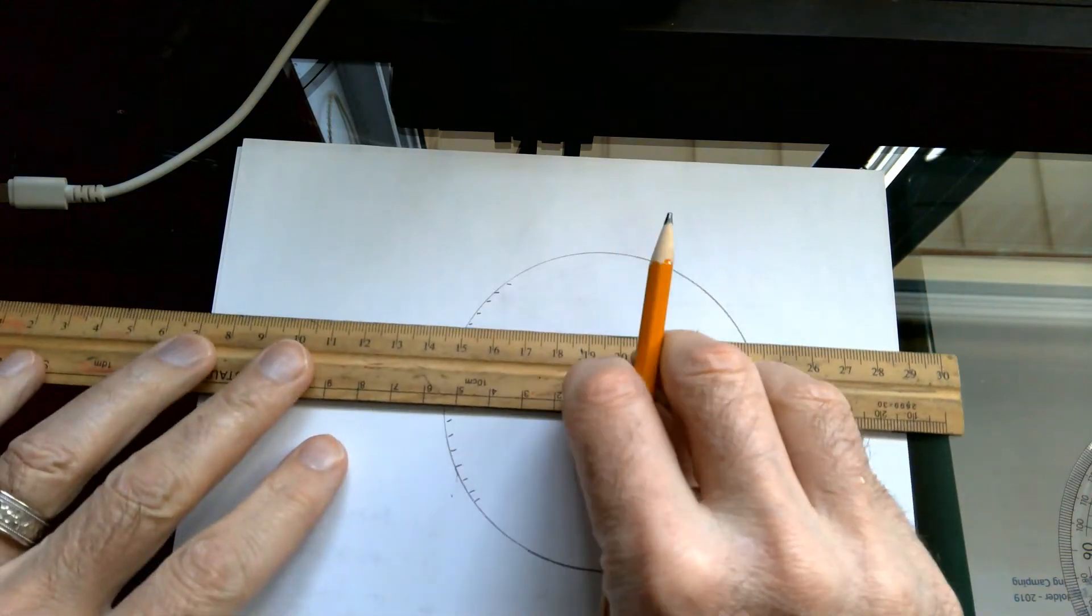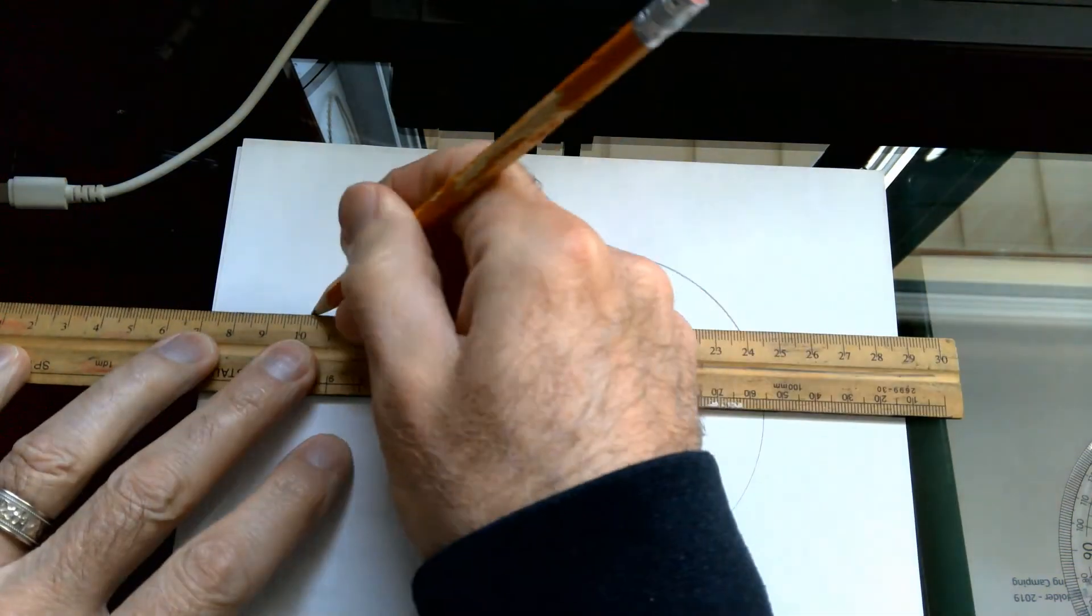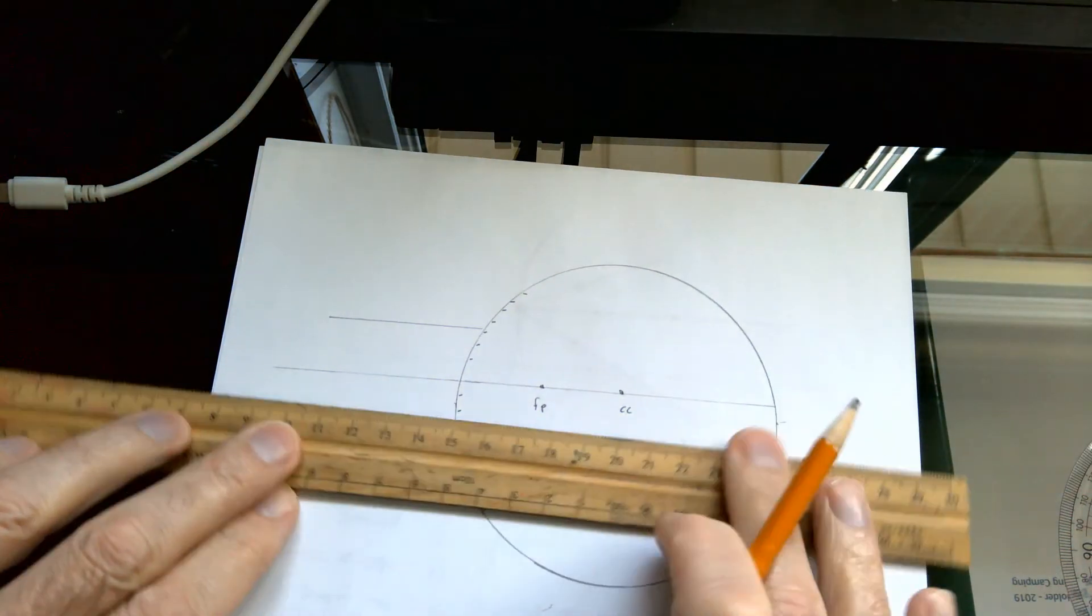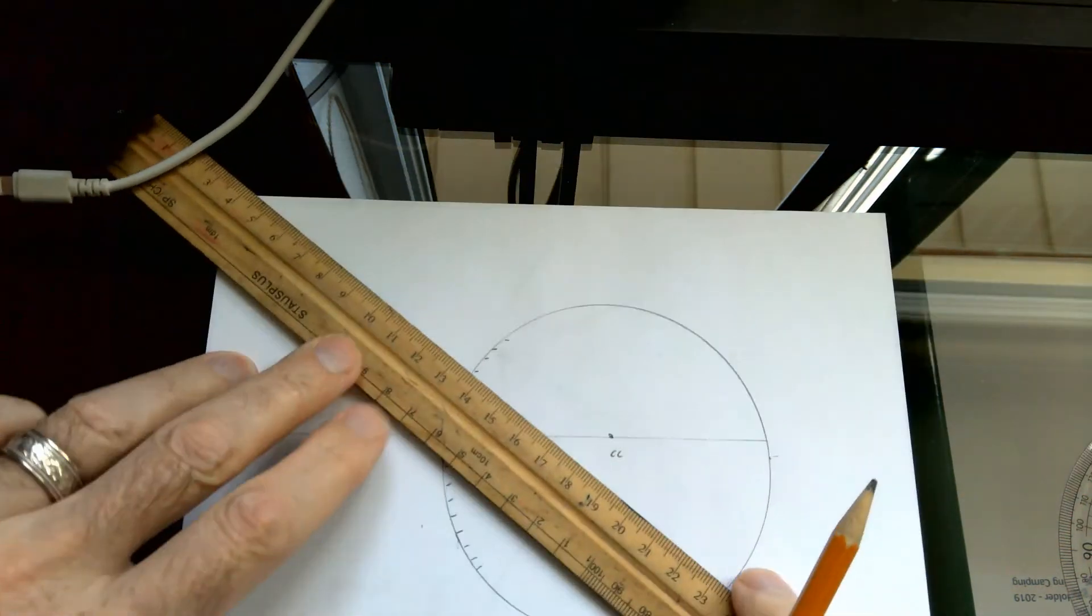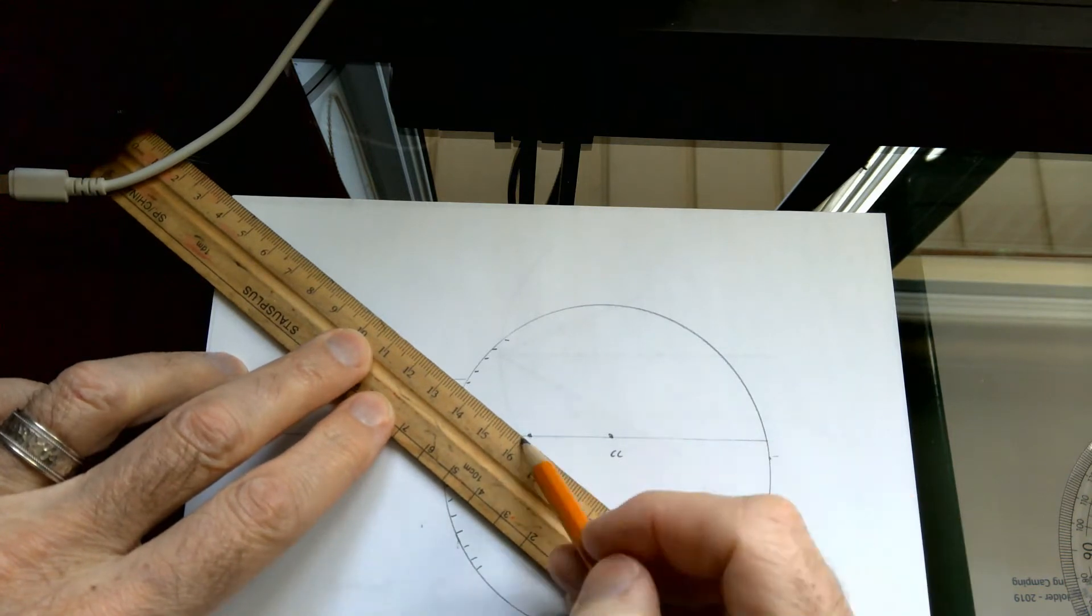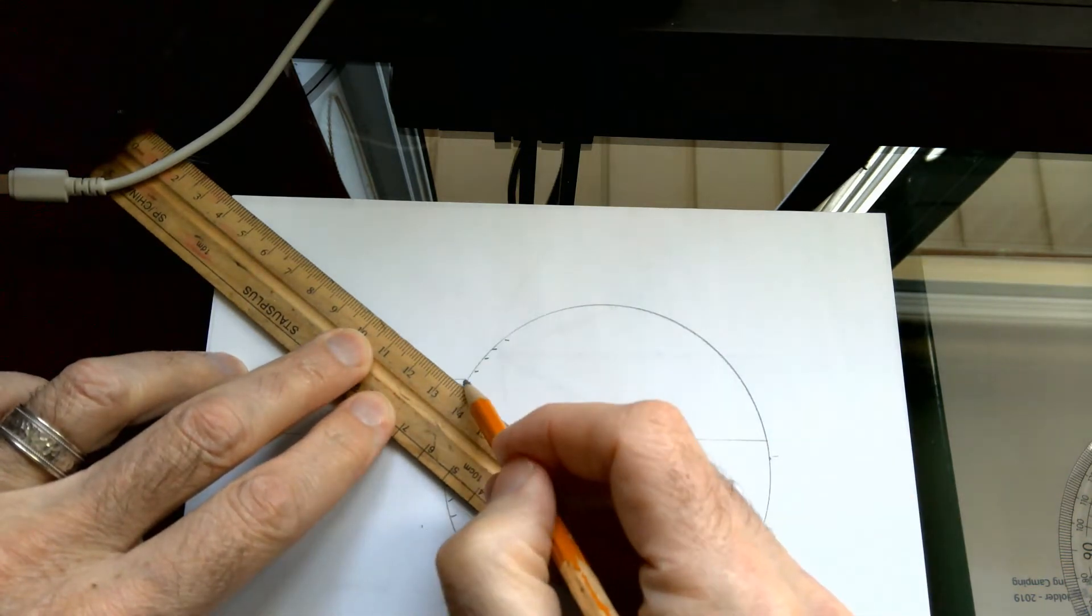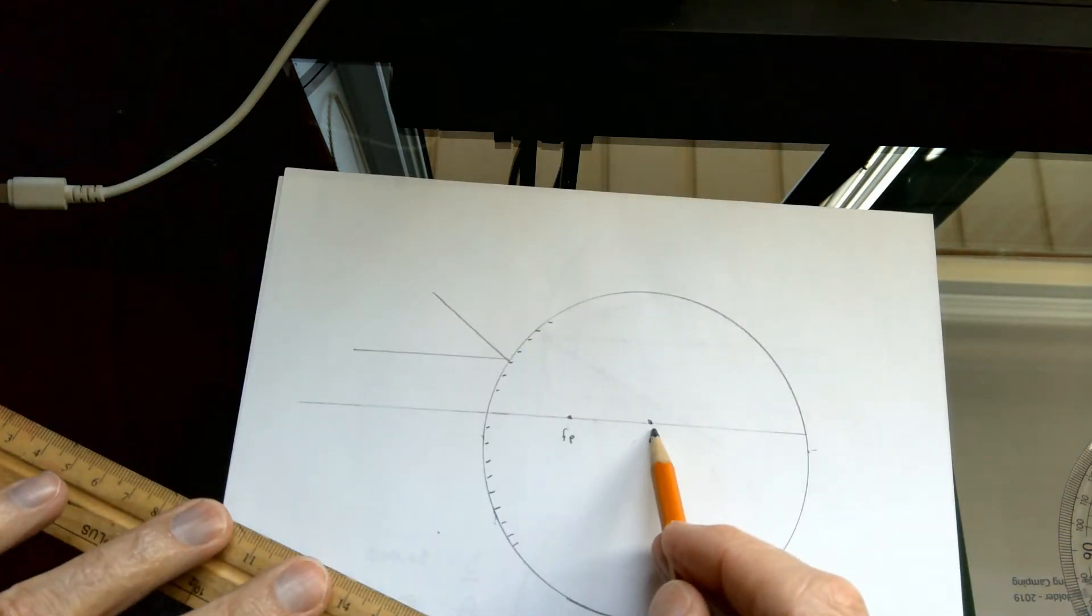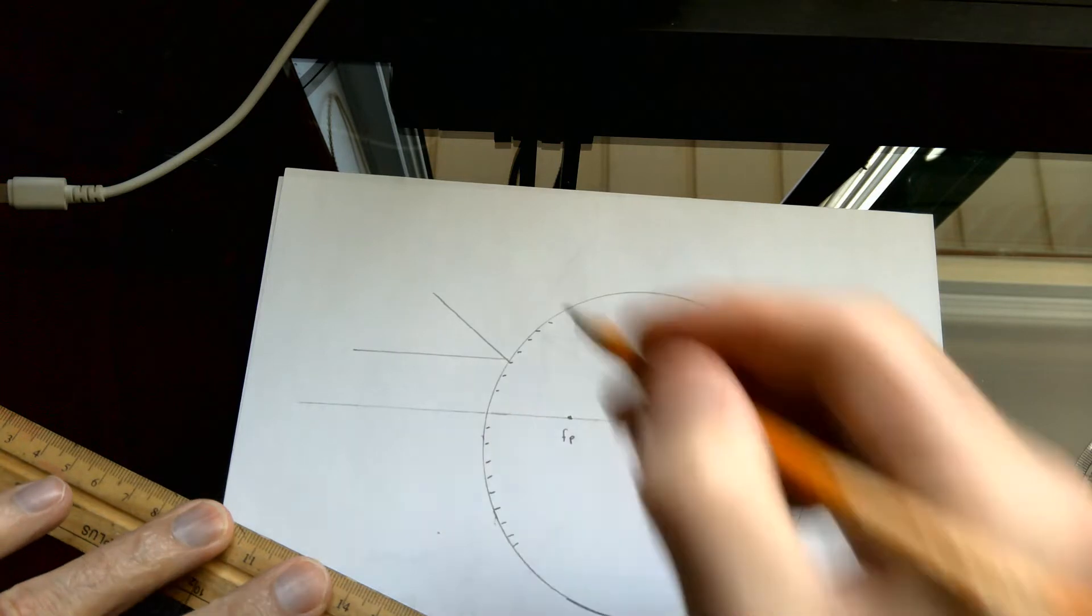If you shine a ray of light parallel to the principal axis, it will reflect away due to the curvature of the mirror, and it will reflect away from the focal point. Remember, the focal point is the distance that's halfway from the center of the curvature, or the center of the circle, to the edge of the mirror.